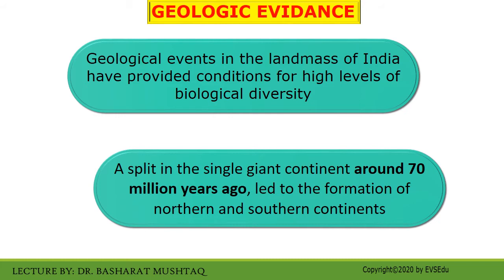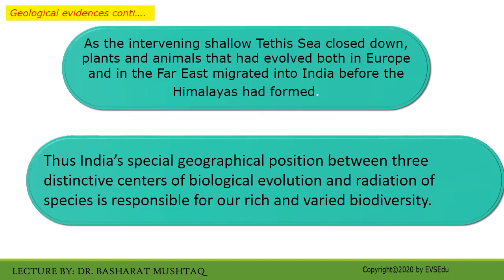Later, tectonic movements shifted India northward across the equator to join the Eurasian continent. As the intervening shallow Tethys Sea closed down, plants and animals that had evolved both in Europe and in the Far East migrated into India before the Himalayas had formed. A final flux came from African and Ethiopian species which were adapted to the savannahs and semi-arid regions. Thus, India's spatial geographical position between three distinct centers of biological evolution and radiation of species is responsible for its rich and varied biodiversity.